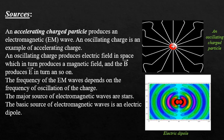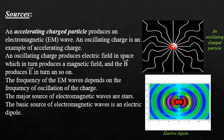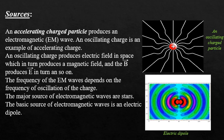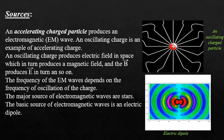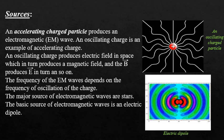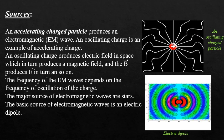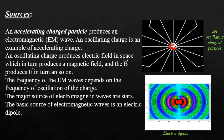An oscillating charge is an example of an accelerating charge. An oscillating charge produces an electric field in space, which in turn produces a magnetic field. The produced magnetic field in turn produces an electric field, and the cycle goes on.